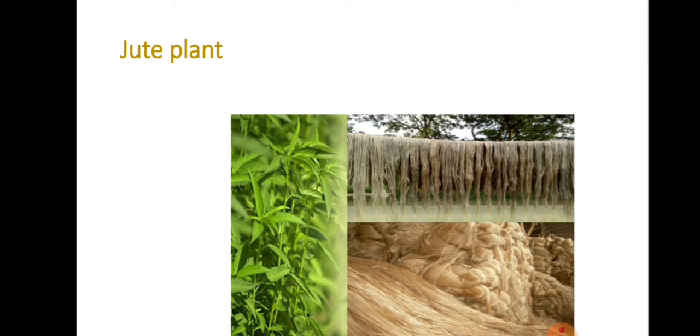Next, the next plant fiber is the famous jute plant. This is the plant, the green color is jute plant, and this is the jute fiber. Actually, the jute fiber is obtained from the stem of the jute plant. We can see jute plants mainly grown in West Bengal, Bihar, and Assam in India.